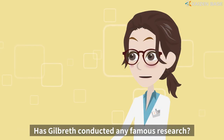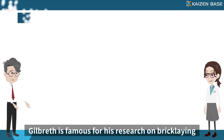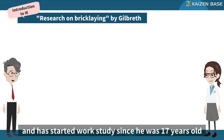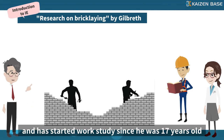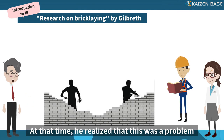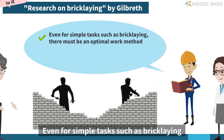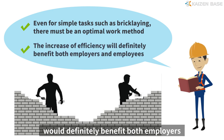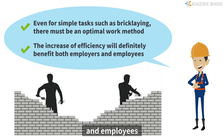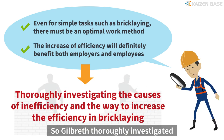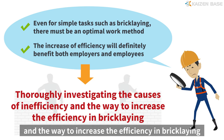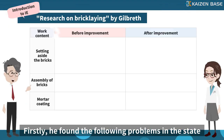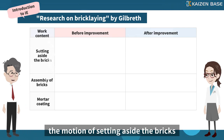Gilbreth is famous for his research on bricklaying. Gilbreth used to be a bricklayer at a construction company and started work studies since he was 17 years old. He realized that even for simple tasks such as bricklaying, there must be an optimal work method, and that increasing efficiency would benefit both employers and employees. So Gilbreth thoroughly investigated the causes of inefficiency and the ways to increase efficiency in bricklaying, finding the following problems regarding the motion of setting aside bricks.